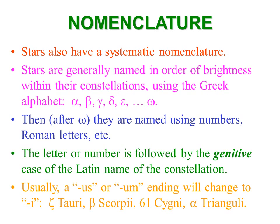Bayer named the stars within constellations using the Greek alphabet in order of brightness: alpha, beta, gamma, delta, epsilon, and so forth, all the way down to omega, all lowercase. After omega, they are named using numbers, Roman letters, and other means of identification.